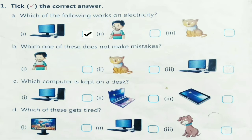Next: which one of these does not make mistakes? Options are boy, cat, and computer. Which does not make mistakes? It is computer. Very good. Third one: which computer is kept on a desk? Options are desktop computer, laptop, and tablet. The correct answer is the desktop computer. The fourth one: which of these gets tired? Options are monitor, desktop computer, and dog. Which one will get tired after doing the work? It is dog. Very good.